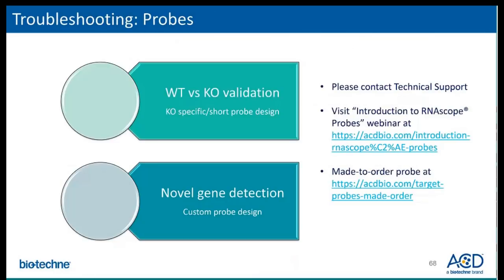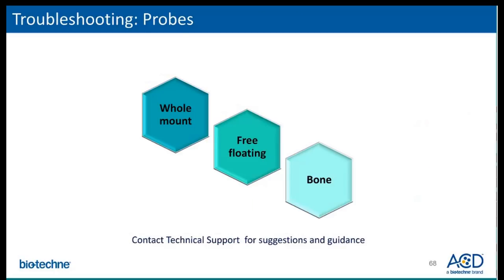For probe-related troubleshooting, if you are working with knockout validations, please contact technical support to help ensure the probe you are picking is specific for wild-type versus knockout validation. If you are working with novel genes and no catalog probe is available, please contact your area account manager or visit our website to get a custom probe design started. We also have recommended sample preparation protocols for unique sample types such as old mouse, free-floating tissue, or bone — feel free to contact tech support for suggestions and guidance.